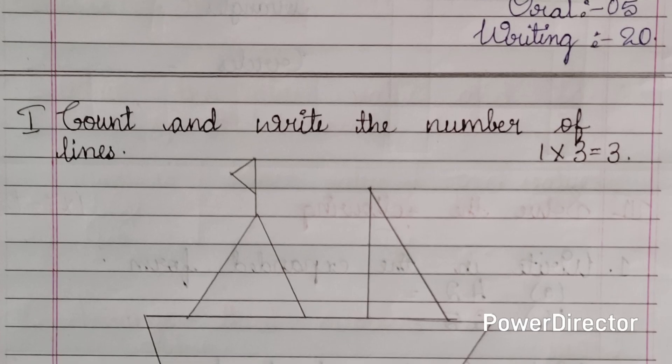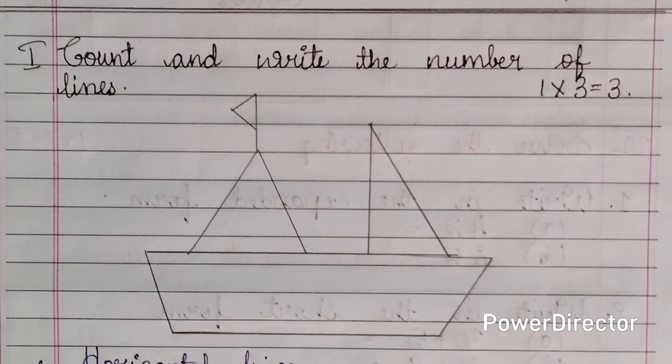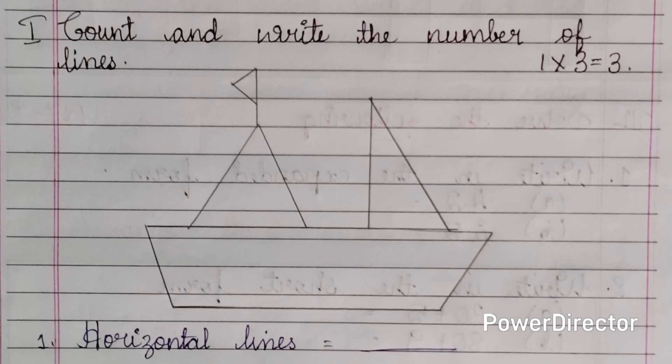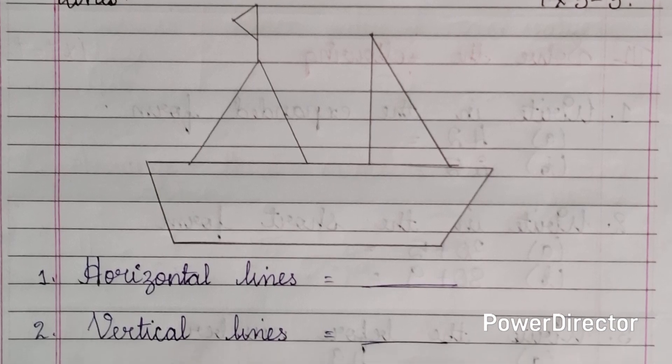First main, count and write the number of lines. You can see a picture over here. From this picture, you need to count and write horizontal lines, vertical lines and slanting lines. Three questions are there, each question carry one mark, three mark for this main.